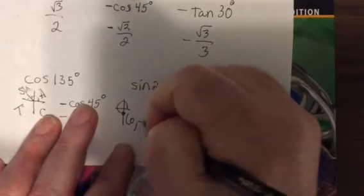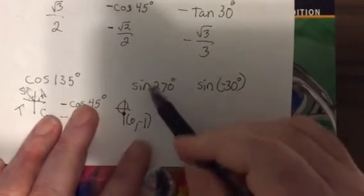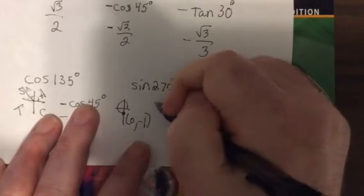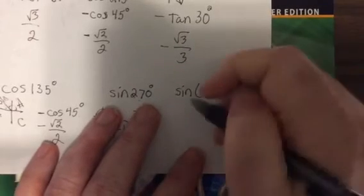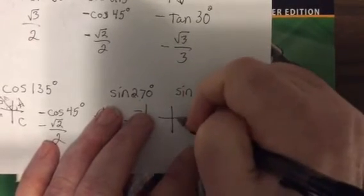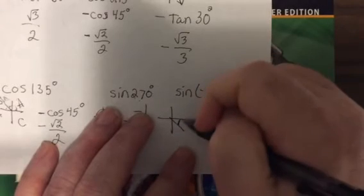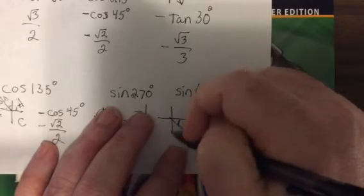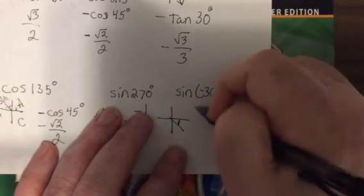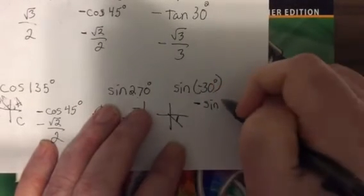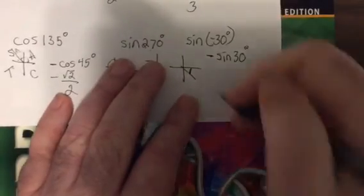So it'd be the point (0, -1). Sine is Y over R. Y is negative 1 over R is positive 1, so it'd be negative 1. I tricked you. Now negative 30, that's right here, so it's in the fourth quadrant. Y is negative, R is positive, so it's negative sine. The reference angle is 30, and the sine of 30 is a half, so it'd be negative half.